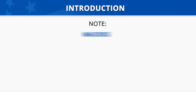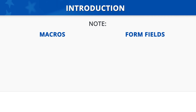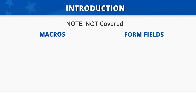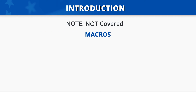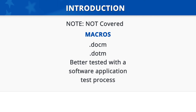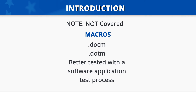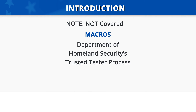It is important to note that documents with macros and documents with form fields are not covered by either the Section 508 Authoring and Testing Guide for Microsoft Word or these tutorial modules. You can determine if a file contains macros if it has a file extension of .docm or .dotm. A document with macros contains programmed formatting and is better tested with a software application test process. The AED-COP recommends the Department of Homeland Security's Trusted Tester Process.